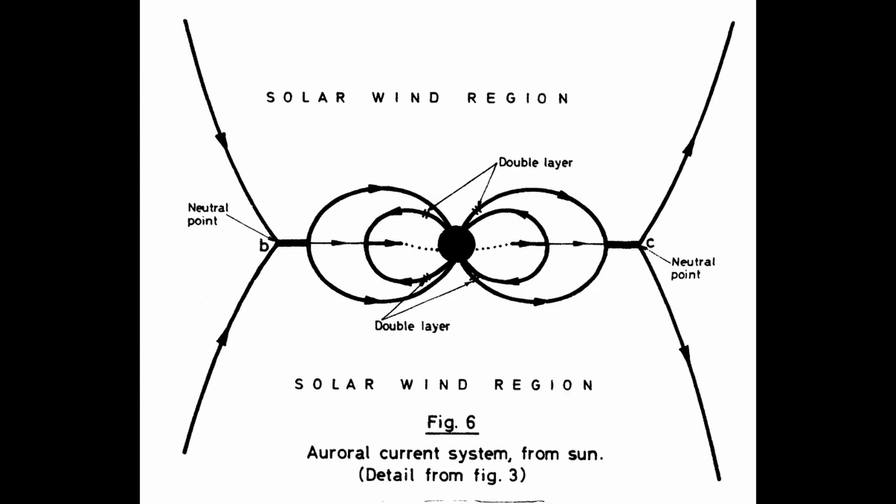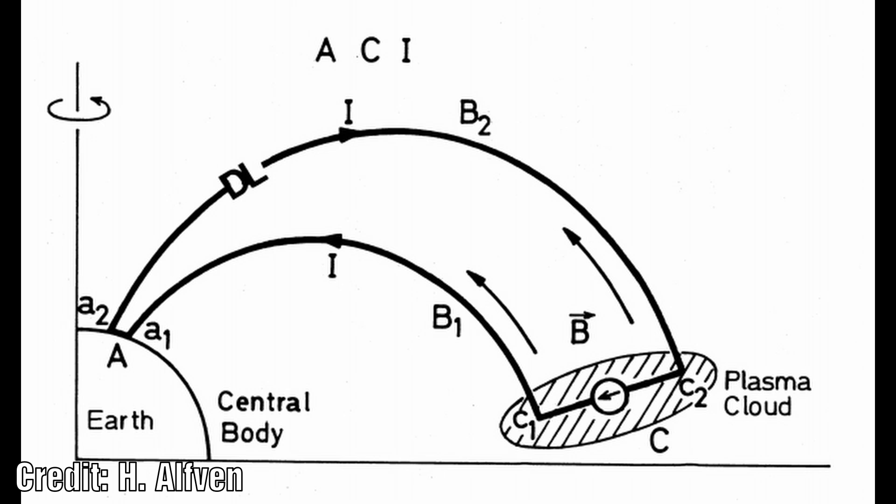In the auroral current system, the central body maintains a dipole field. B1 and B2 are magnetic field lines from the body. C is a plasma cloud near the equatorial plane moving in the sunward direction producing an electromotive force which gives rise to a current in the circuits C1, A1, A2 and C2.